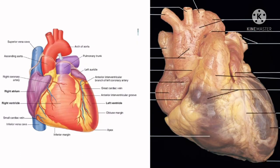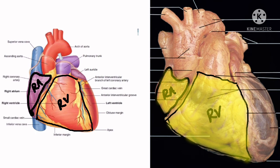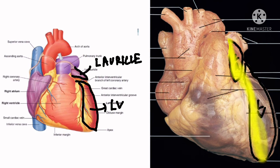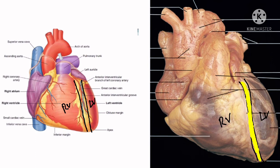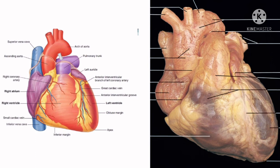The heart presents three surfaces. First, the sternocostal or anterior surface, formed mainly by the right atrium and right ventricle, which are separated from each other by the anterior part of the atrioventricular groove. The sternocostal surface is also partly formed by the left auricle and the left ventricle, separated by the anterior interventricular groove. The left atrium is hidden in front by the ascending aorta and pulmonary trunk.